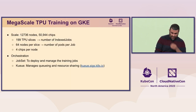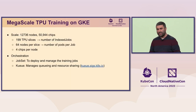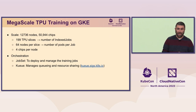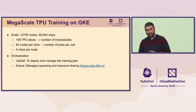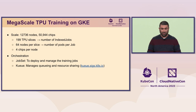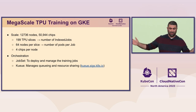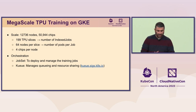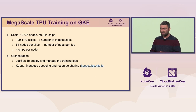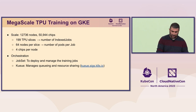This is an example workload we ran on GKE at scale. We had over 12,000 nodes, over 50,000 TPU chips, almost 200 TPU slices — basically 200 index jobs — and for each index job, 64 pods.